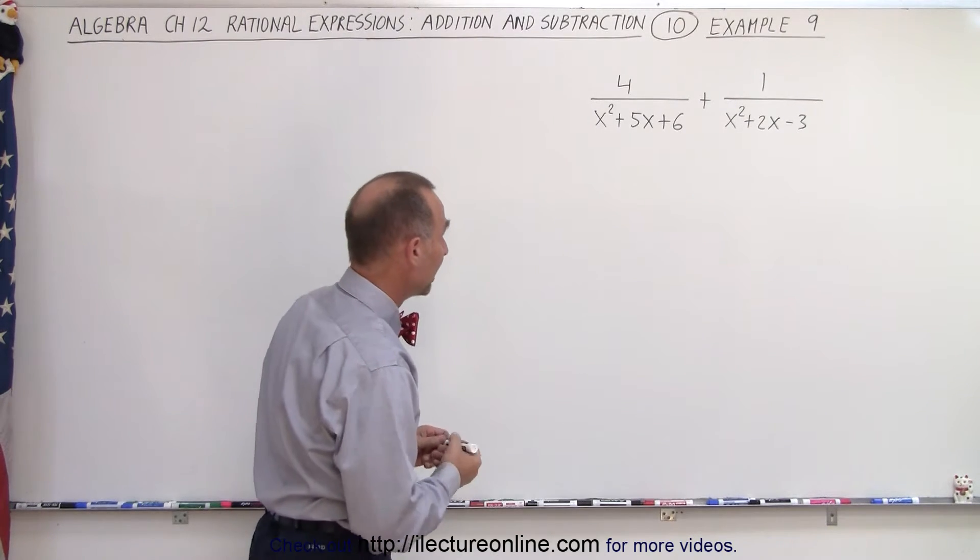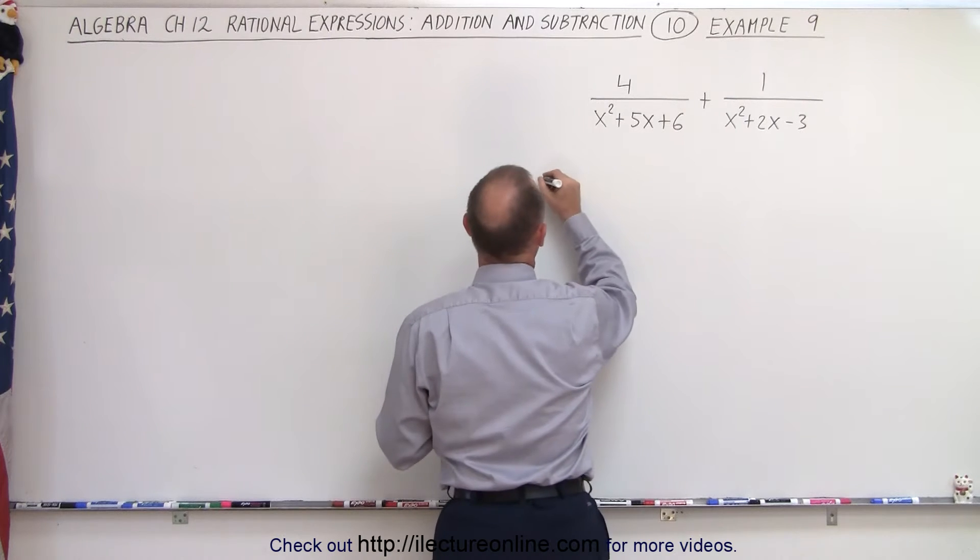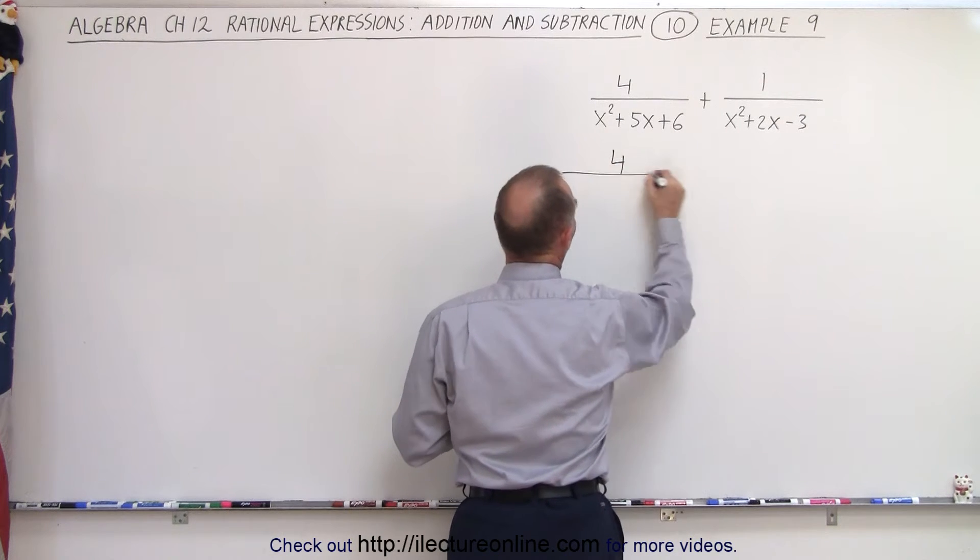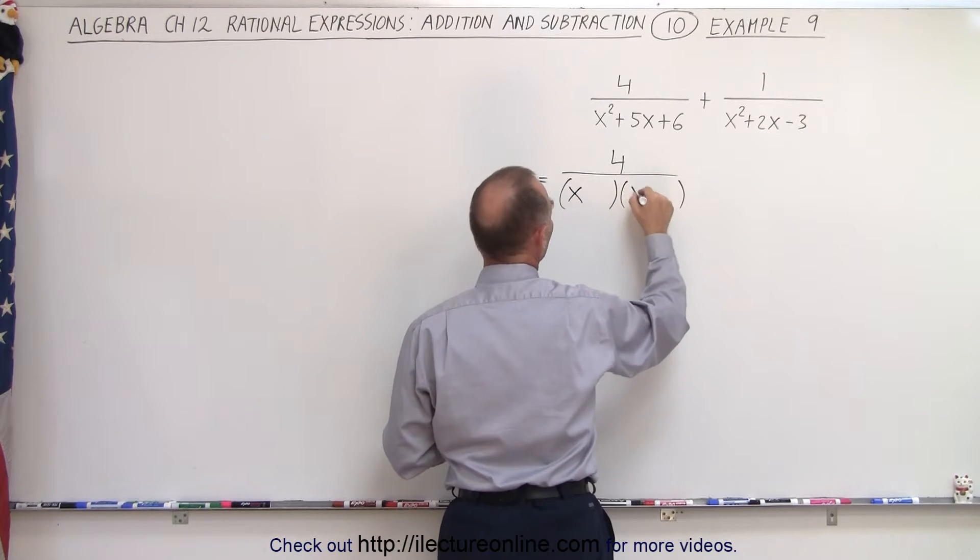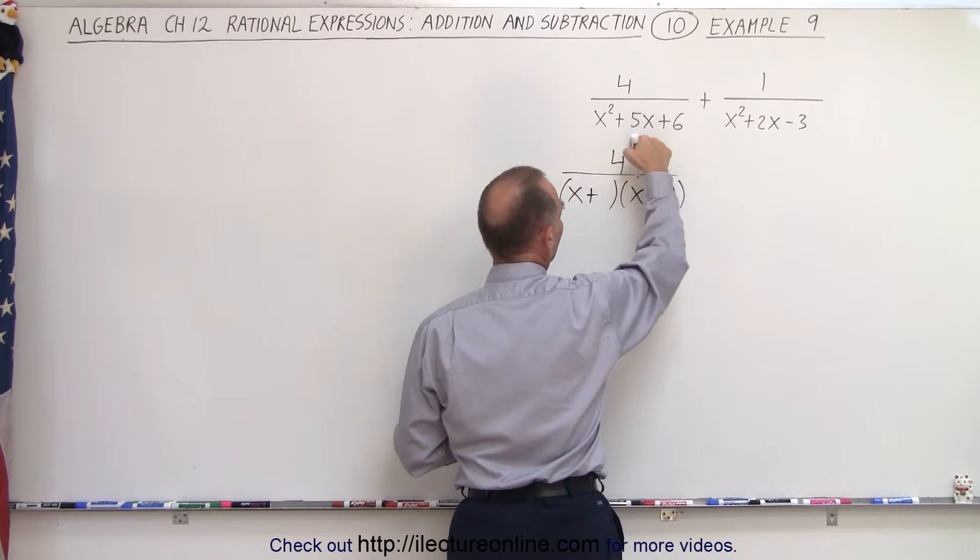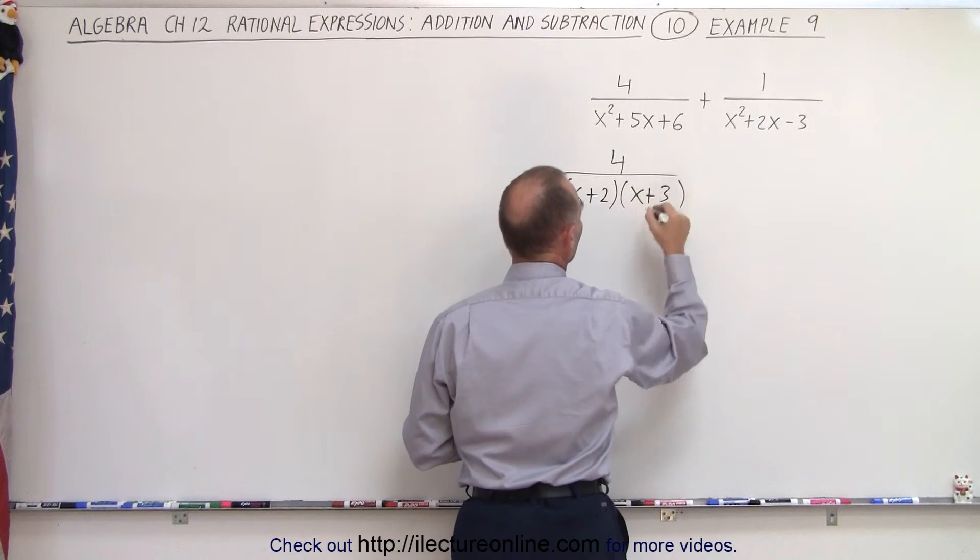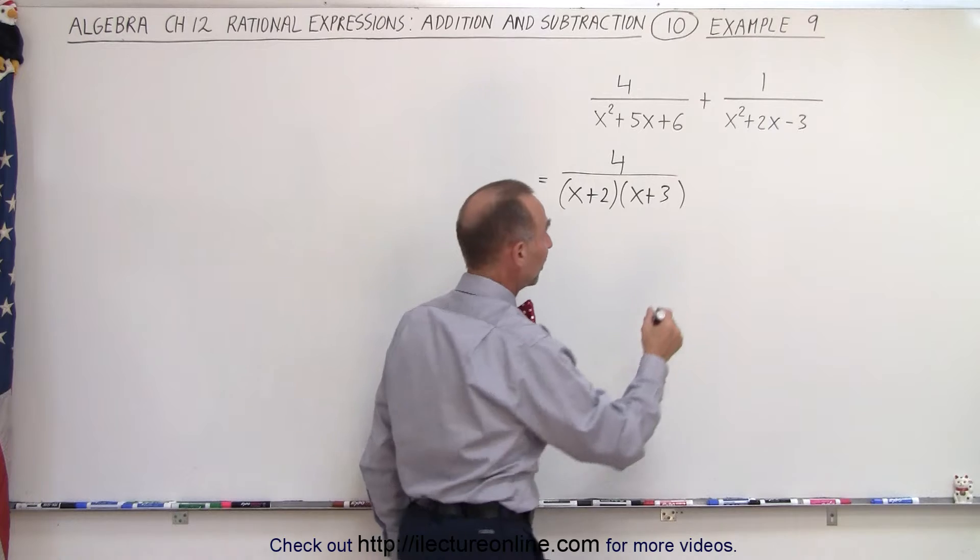So again, let's factor whatever we can, and this then becomes 4 divided by, when we factor this denominator, we get two binomials. We get an x and an x, everything is positive, the product is 6, the sum is 5, so the numbers 2 and 3 will work.